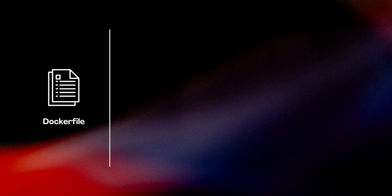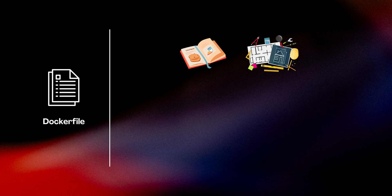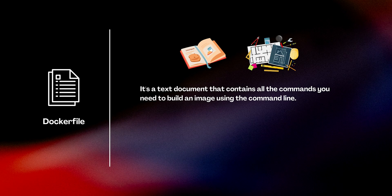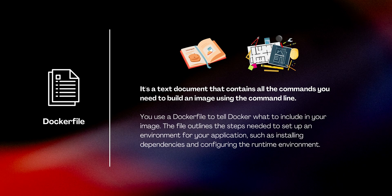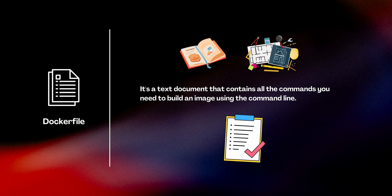A Docker file is like a recipe or blueprint for building Docker images. It's a text document that contains all the necessary commands you need to build an image using the command line. You use a Docker file to tell Docker what to include in your image. This file outlines the steps needed to set up an environment for your application, such as installing all the dependencies and configuring the runtime environments.